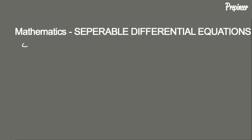Let's look at another example. We're given an initial value problem with y prime equal to (3x squared plus 4x minus 4) divided by (2y minus 4), with the initial value y(1) equal to 3. The first thing we need to do is rearrange this equation into separable differential equation format.